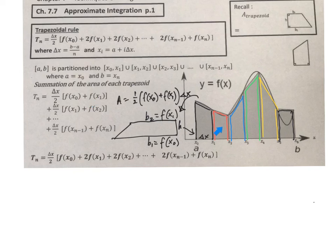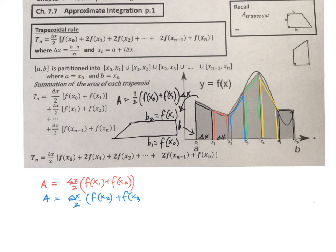For the next trapezoid we have 1 half times f of x1 plus f of x2 times delta x. So let's write it down here. Area of the second trapezoid equals delta x over 2 times f of x1 plus f of x2. The area of the third trapezoid is delta x, same height, divided by 2 times f of x2 plus f of x3. Next, the area of the fourth trapezoid is delta x over 2 times f of x3 plus f of x4.